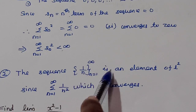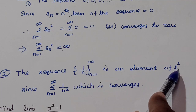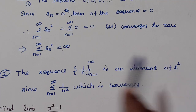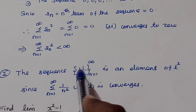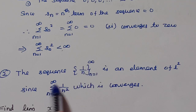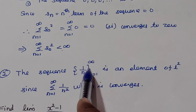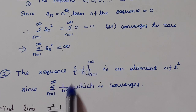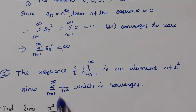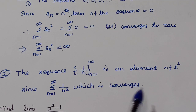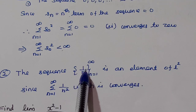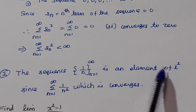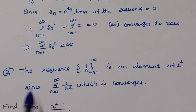Another example: the sequence (1/n) is an element of L². The summation of the nth term squared is Σ (n=1 to ∞) 1/n², which converges. Since Σ 1/n² converges, this sequence is an element of L².